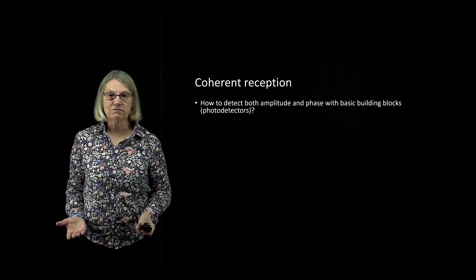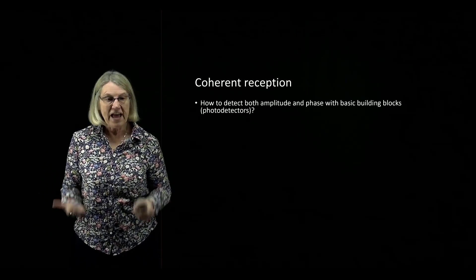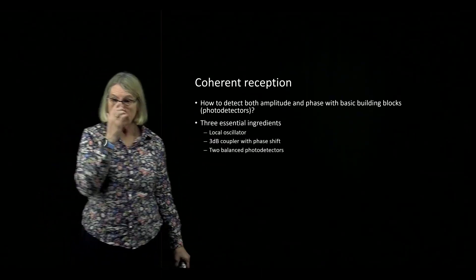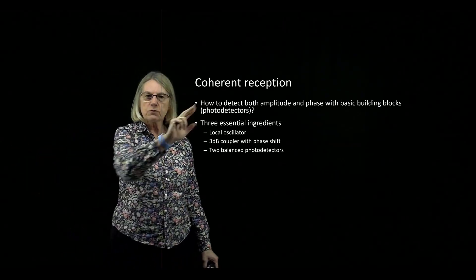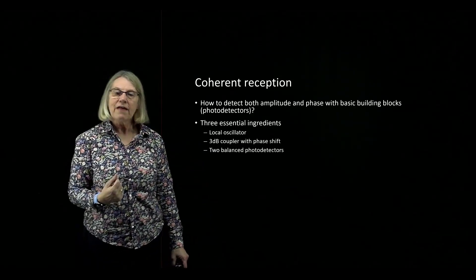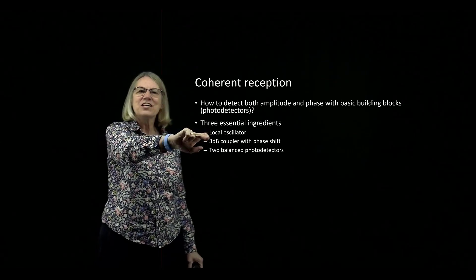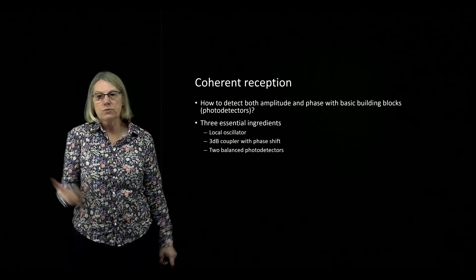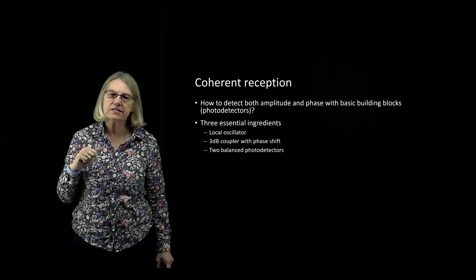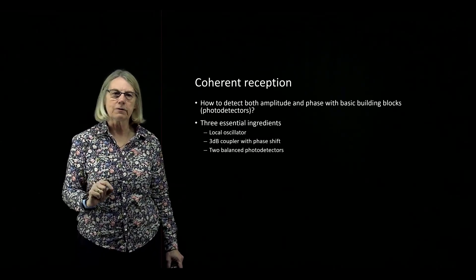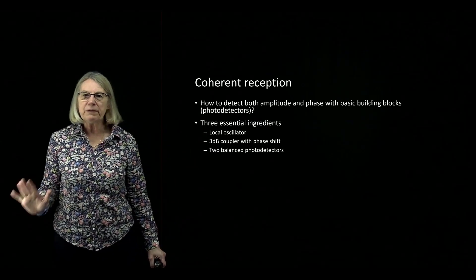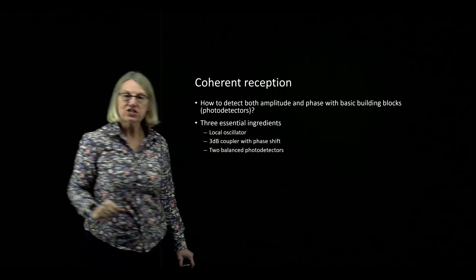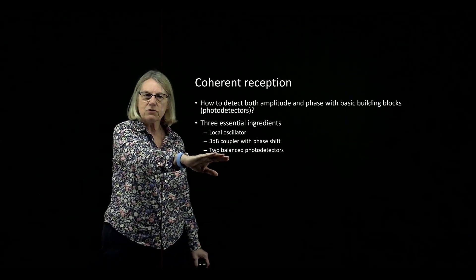I've talked about coherent detection detecting both amplitude and phase, but how do I do that with my basic building block — photodetectors? There are three essential ingredients in photodetector architectures for coherent reception. First is a local oscillator, which is a laser source used at the receiver. Of course we use a laser at transmission, but coherent detection also requires a light source at the receiver. Second, we'll exploit a simple 2x2 3dB coupler — not just for even power splitting, but because we also get to take advantage of a phase shift that occurs. Finally, we'll use balanced photodetectors.